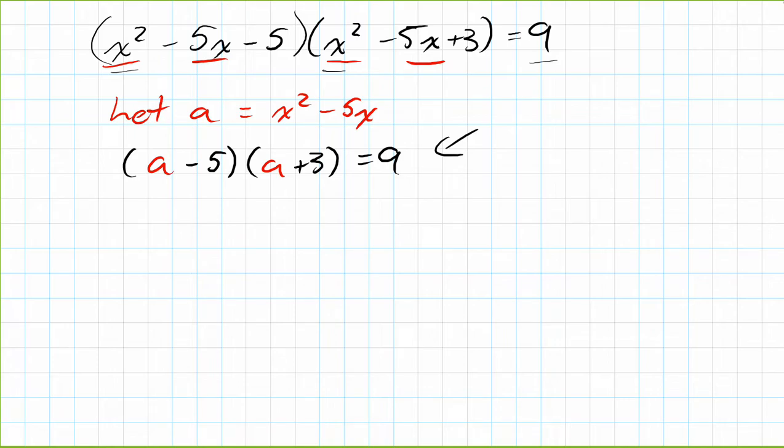So we distribute the a's, we get a squared plus 3a minus 5a minus 15 minus 9 is equal to 0. I just moved that 9 over. I'm going to collect my like terms. We get a squared minus 2a minus 24 is equal to 0.